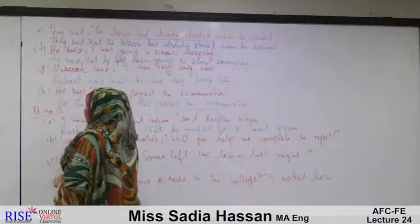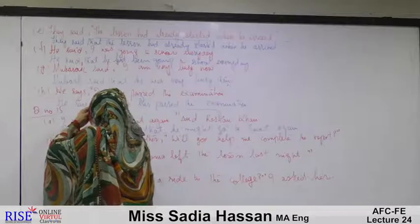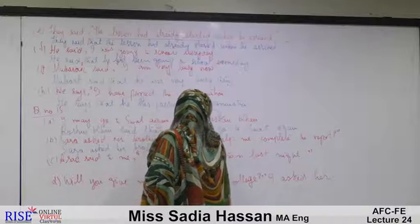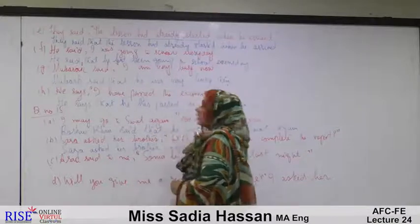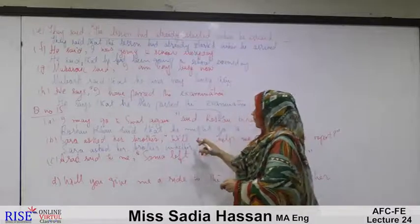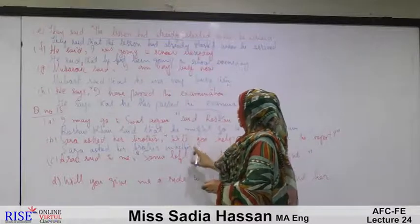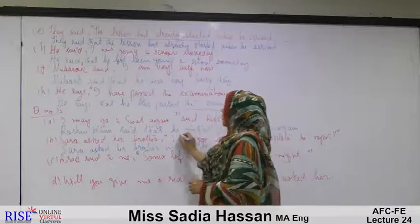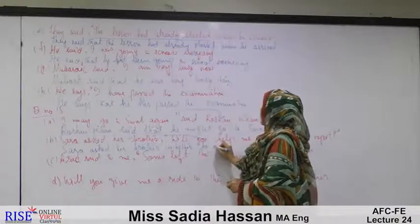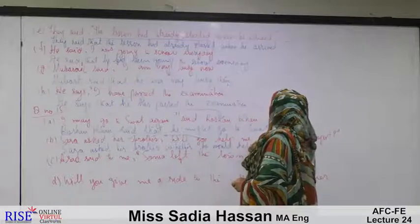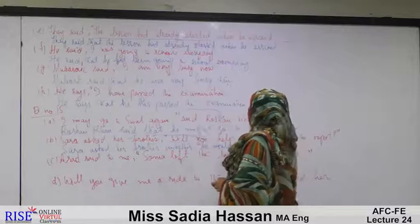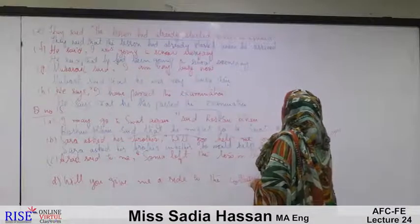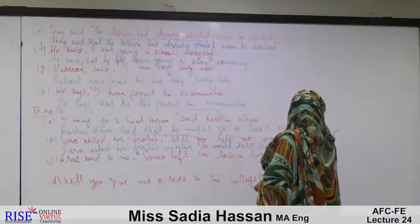Sentence j: Sarah asked her brother, 'Will you help me complete the report?' Since 'will' is a modal verb, we add 'whether.' 'You' changes according to 'her brother' — the object — so it becomes 'he.' 'Will' changes to 'would.' 'I' changes according to Sarah the subject, so it becomes 'her.' Result: Sarah asked her brother whether he would help her complete the report.